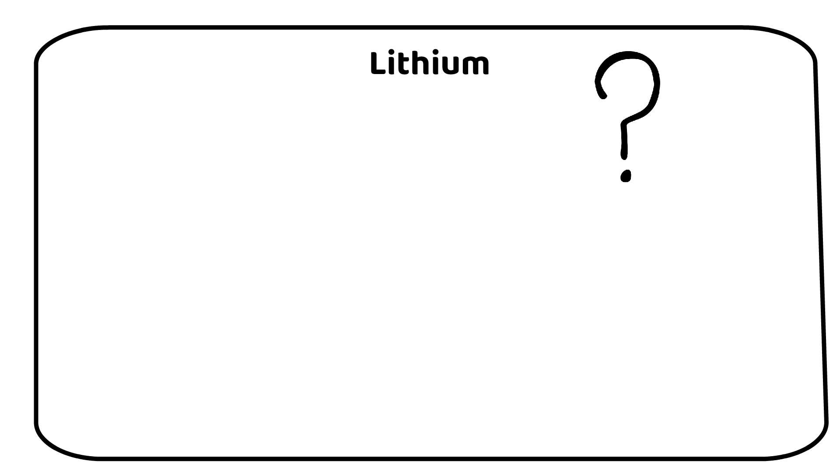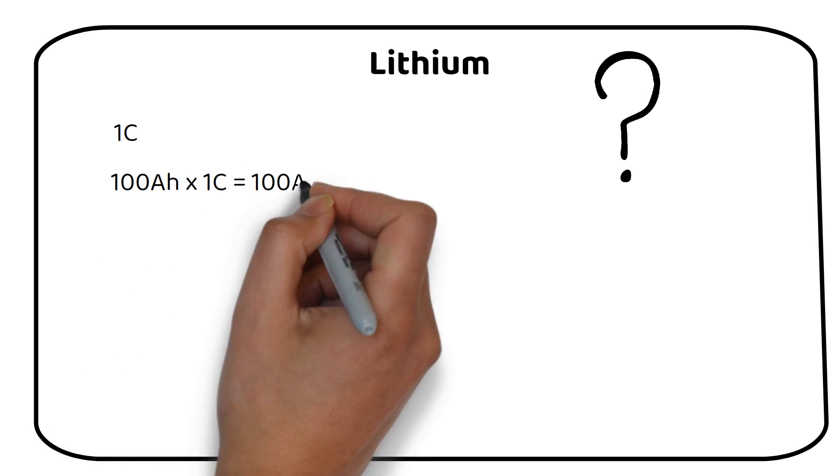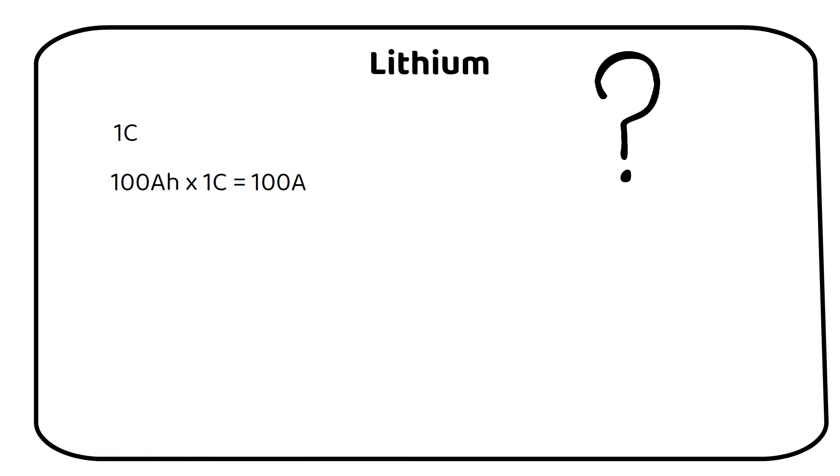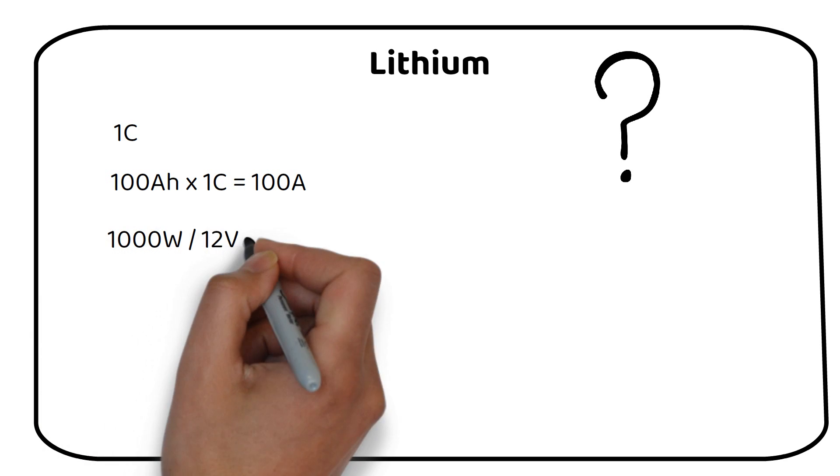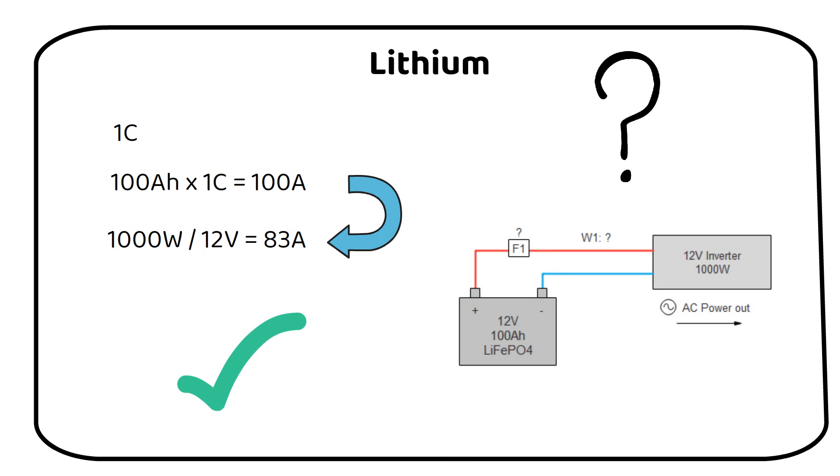A lithium battery has a recommended C rate of 1C. So a 12 volt 100 amp hour lithium battery can deliver a current of 100 amps. From our previous calculation we saw that the 1000 watt inverter can draw a maximum of 83 amps. This is well below the recommended discharge current for a lithium battery. So we only have to use one 12 volt 100 amp hour lithium battery with a 1000 watt inverter. Did you get it right?